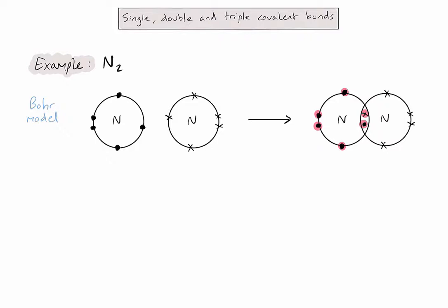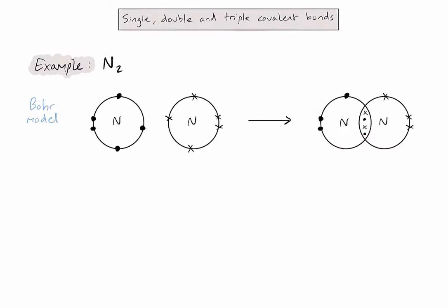So let's try again, but this time have the nitrogen atoms sharing two pairs of electrons. Again, let's count the electrons, the valence electrons for the atom on the left. There's seven.